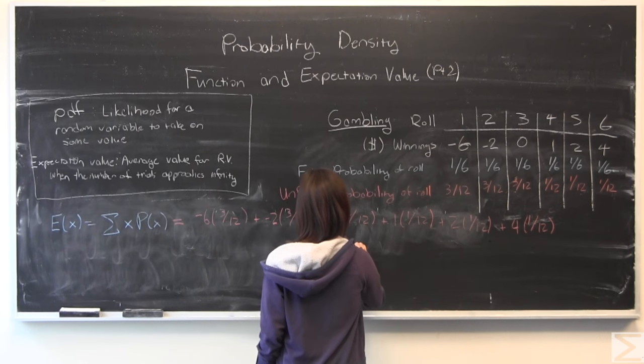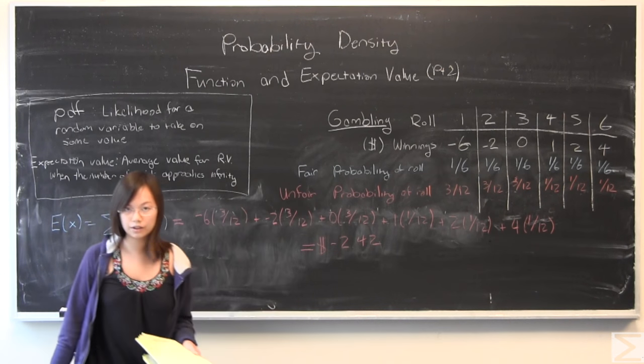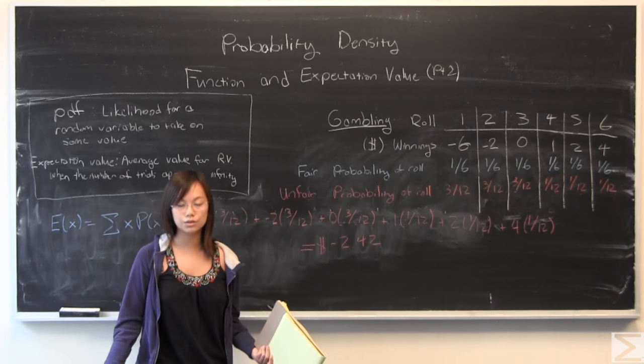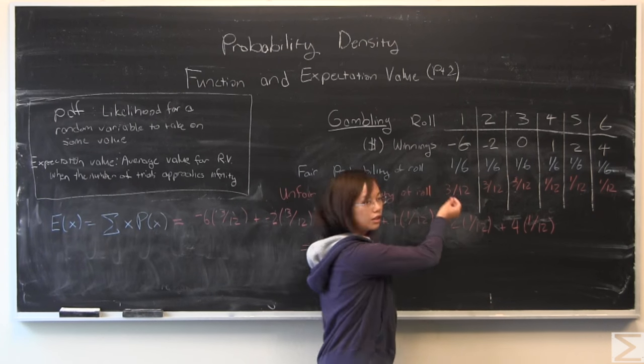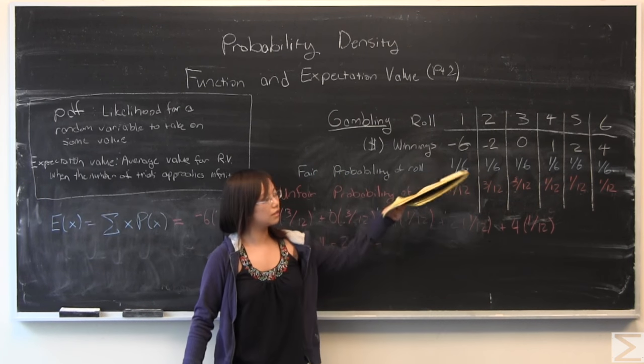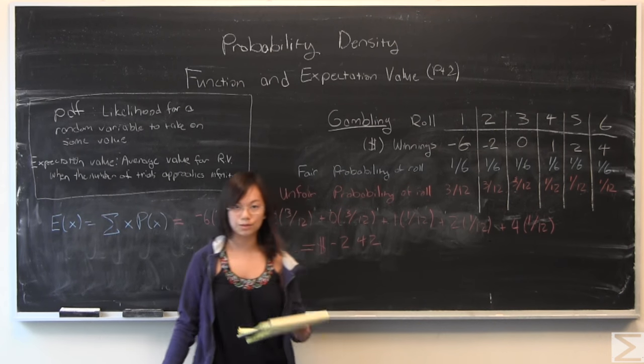We add those all up, and from that we are able to see that we are expected to lose $2.42 from this gamble. There is a much stronger bias towards getting the lower numbers, which lose you money.